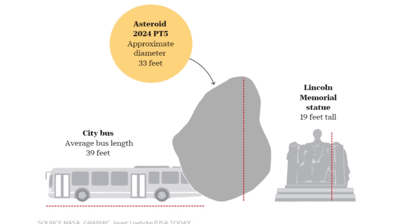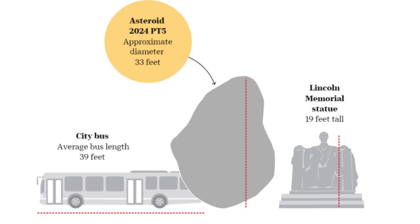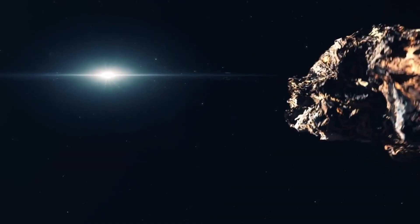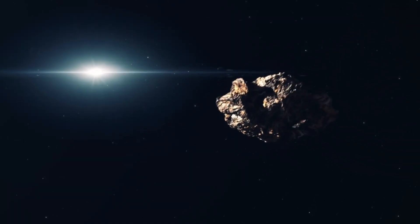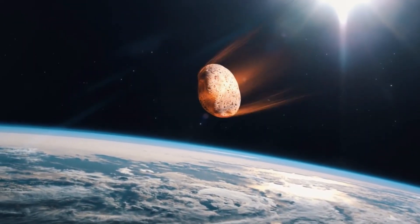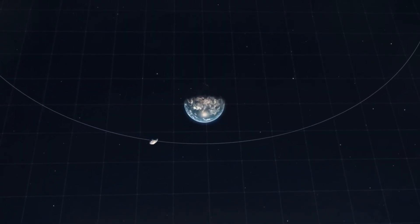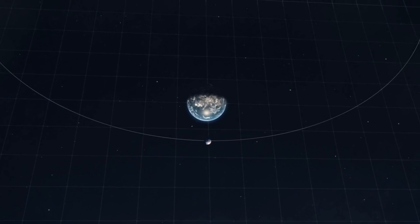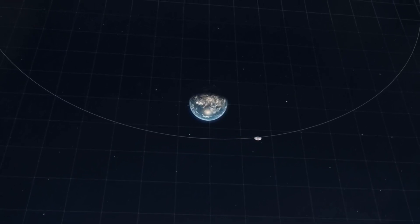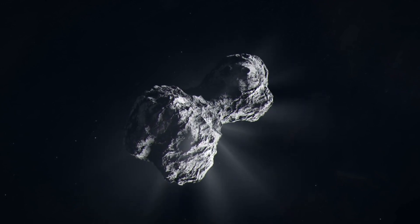This intriguing celestial object measures approximately 10 meters, or 33 feet across. While it may be considered small in the vastness of space, it's certainly significant enough to capture our attention. The good news is that PT5 is not headed for a collision with Earth. Instead, it will temporarily take on the role of a mini-moon, orbiting our planet before resuming its journey around the Sun.